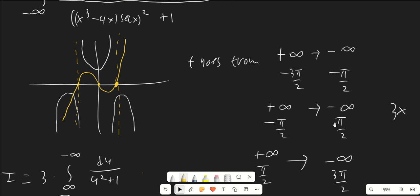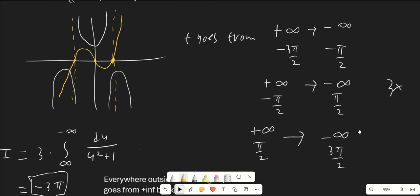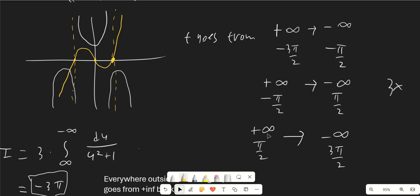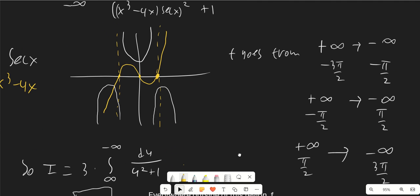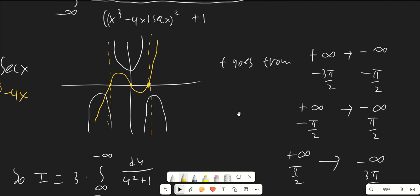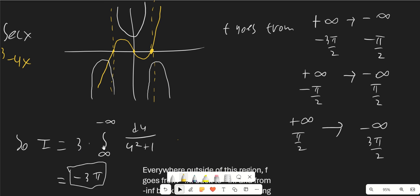From −π/2 to π/2 the function again goes from positive infinity to negative infinity, and from π/2 to 3π/2 it does so again — three times overall. So we're essentially integrating as u goes from positive infinity to negative infinity three times, giving us three times the integral from positive infinity to negative infinity of du over u² + 1.